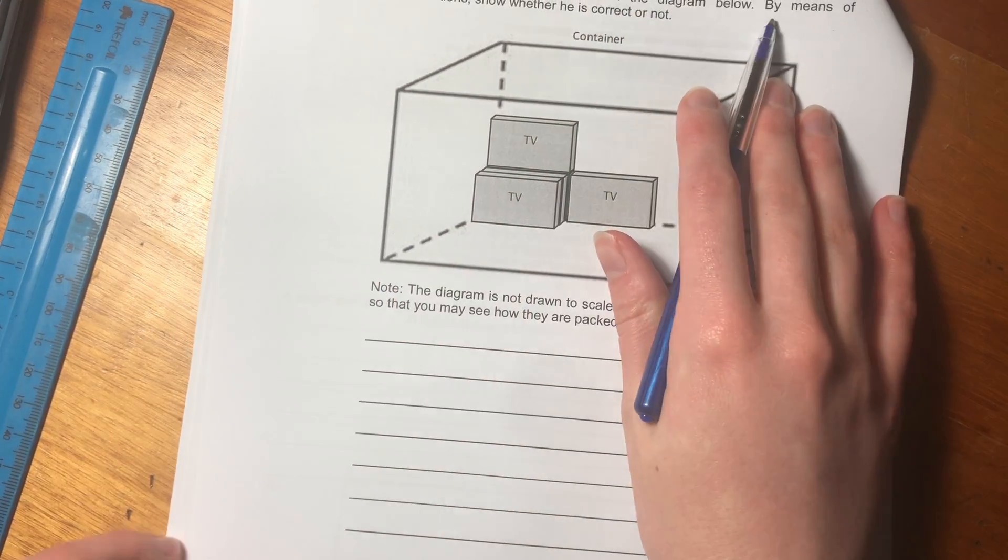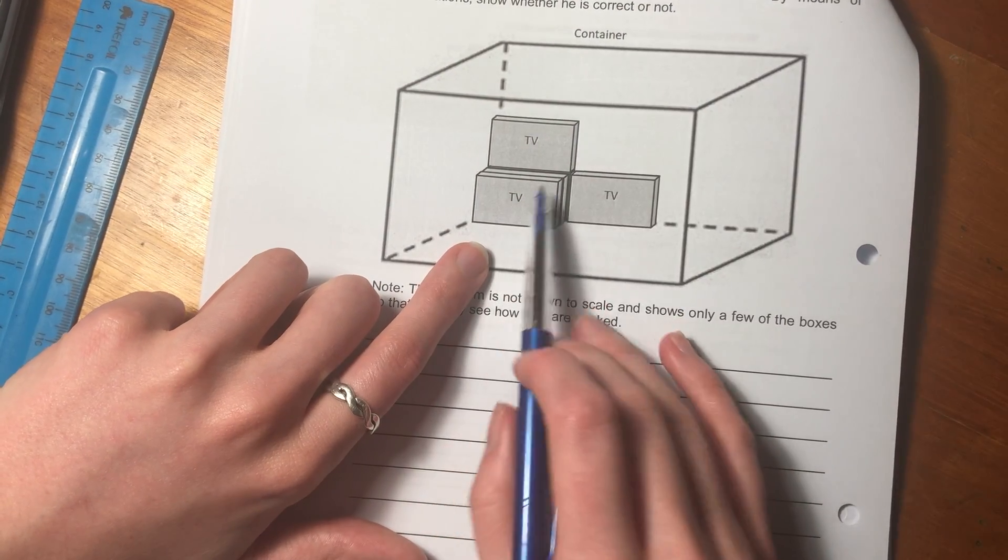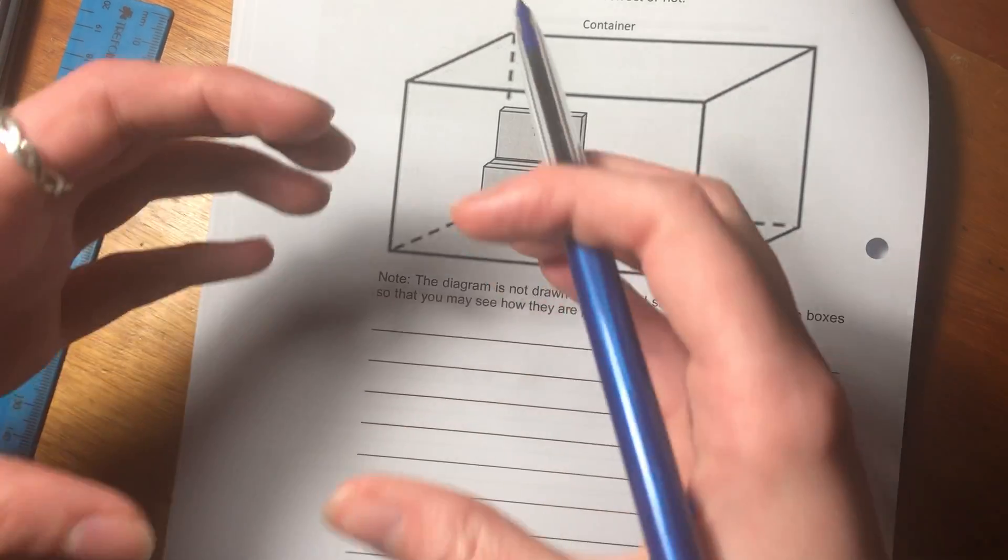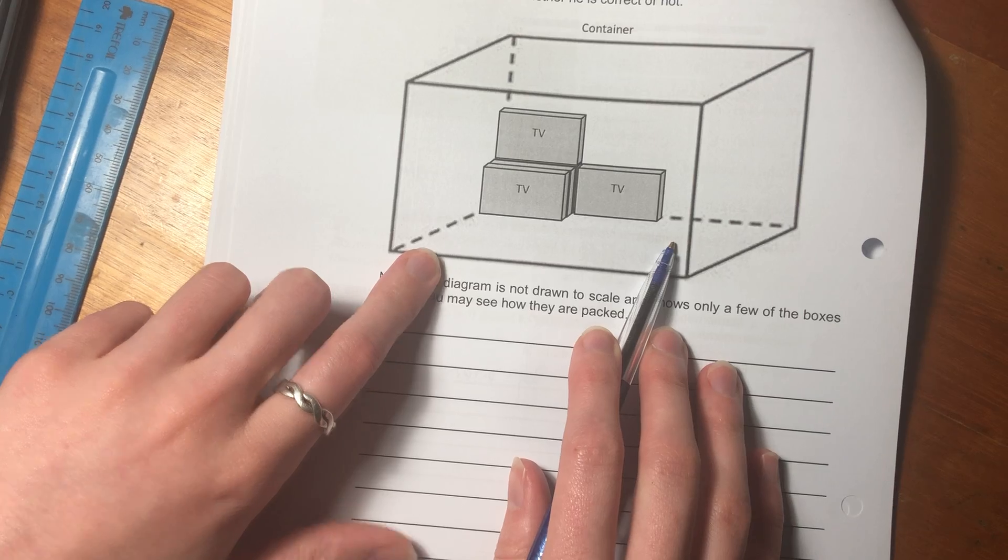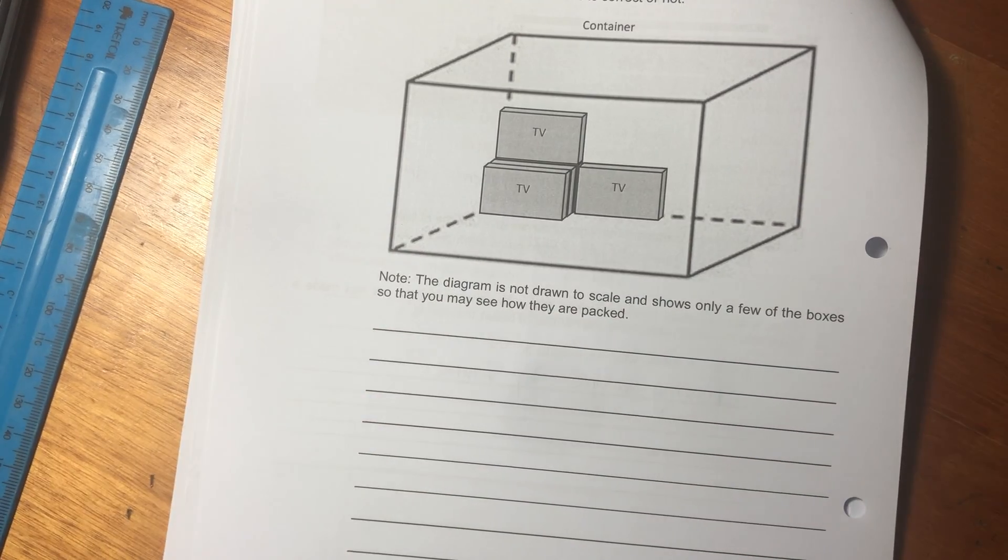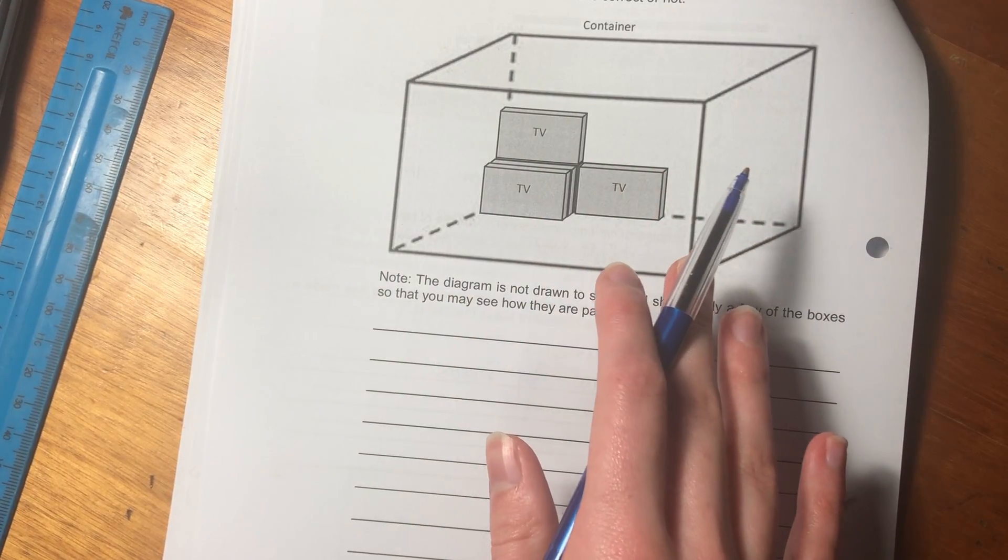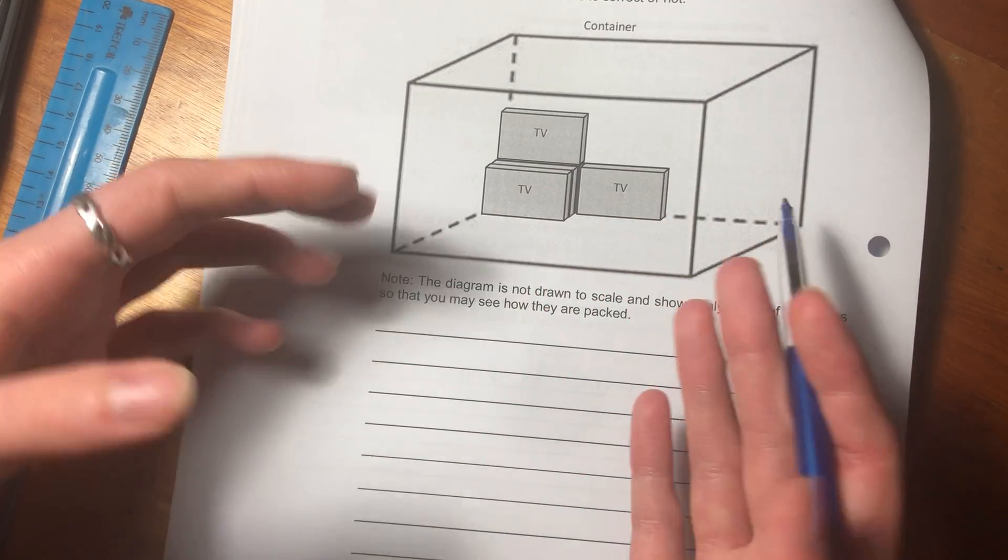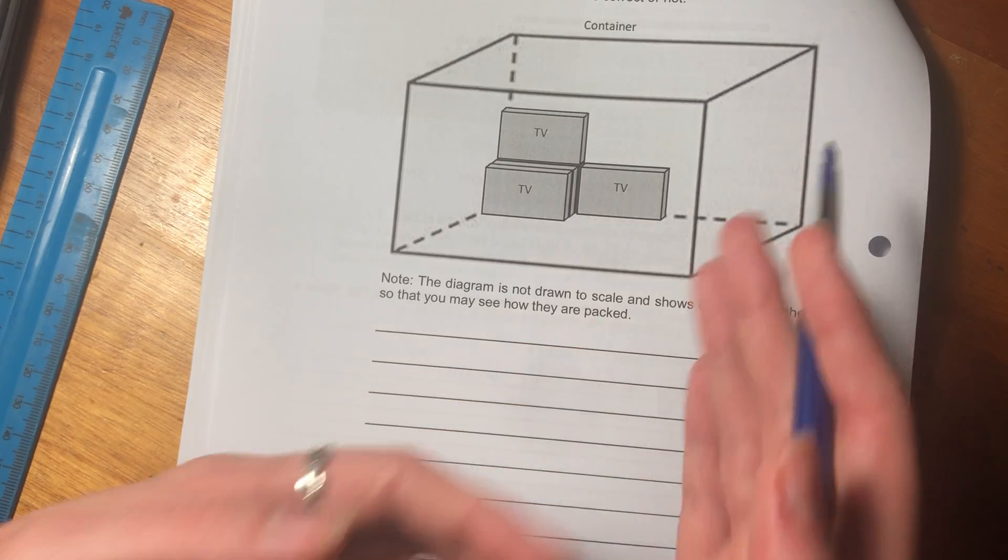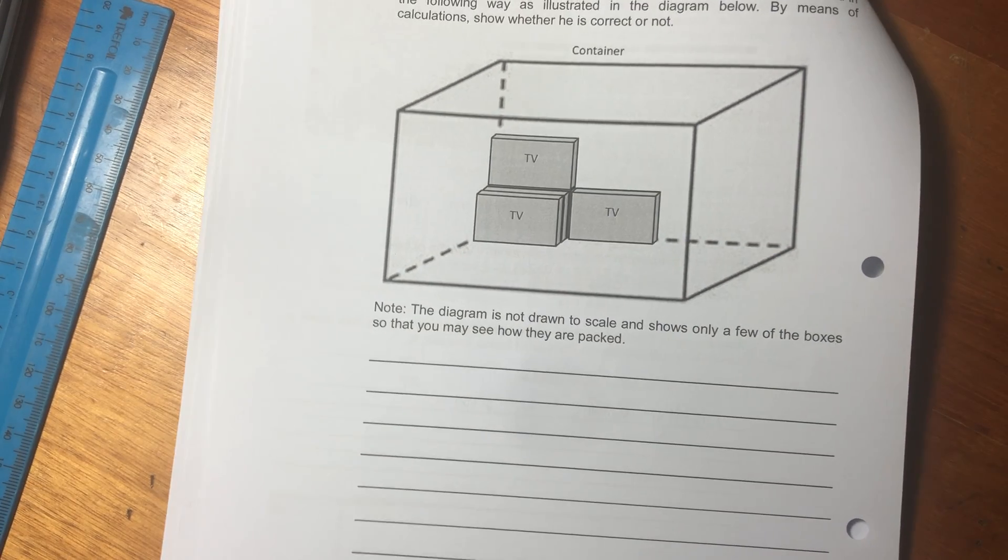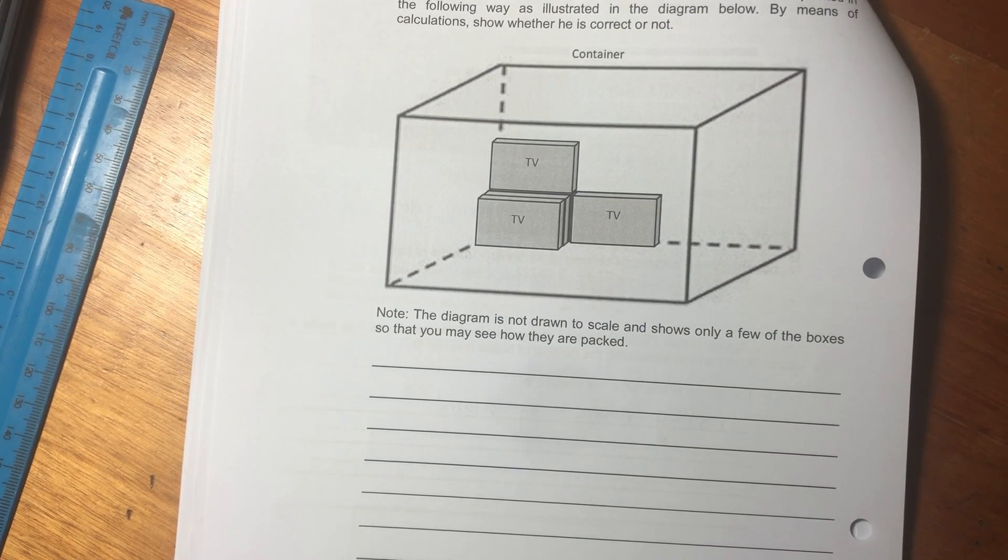So before we even read the scenario, let's just look at this diagram. Do you see that the TVs have to be put in in a particular way into the box to fit them in? You can't just throw them in and they'll take on the shape of the overall box or container. So that's why saying volume divided by volume would be incorrect, because you can't just squish TVs in however. They have a set shape.